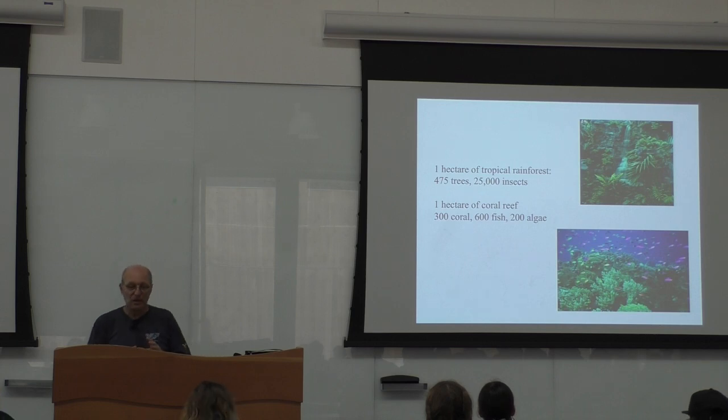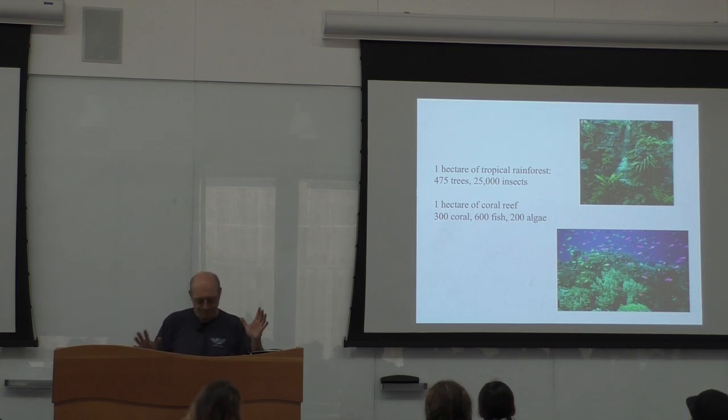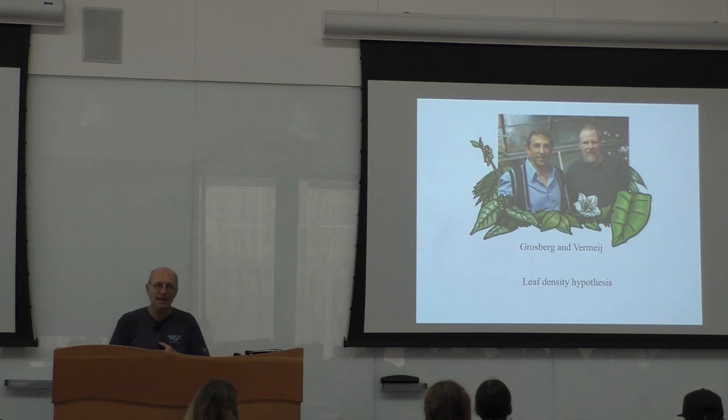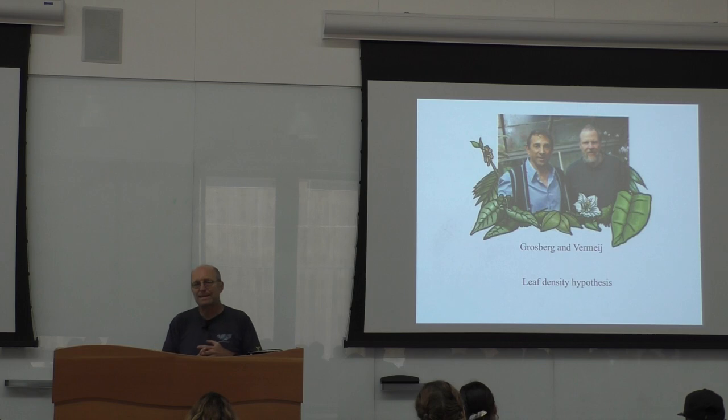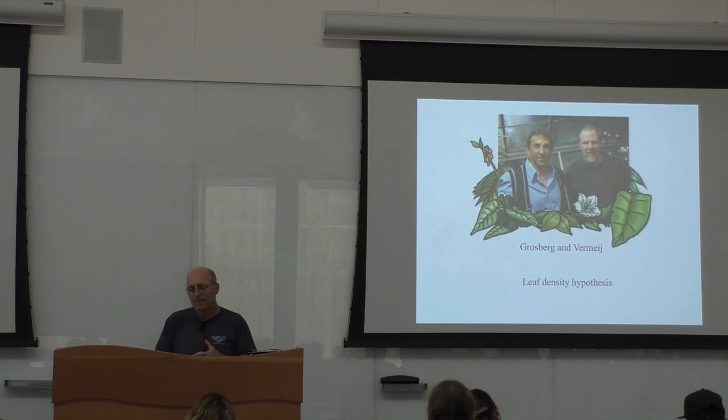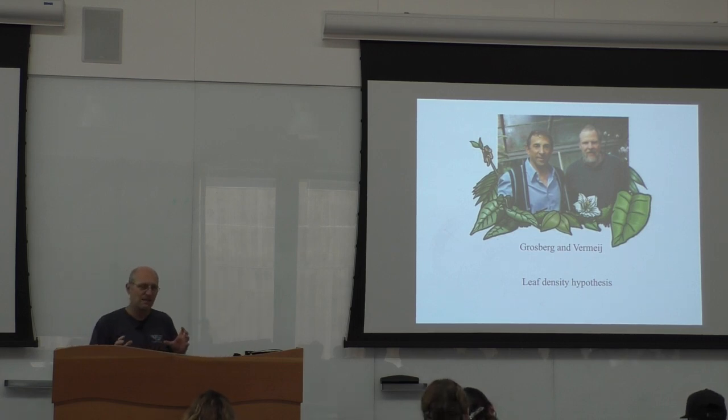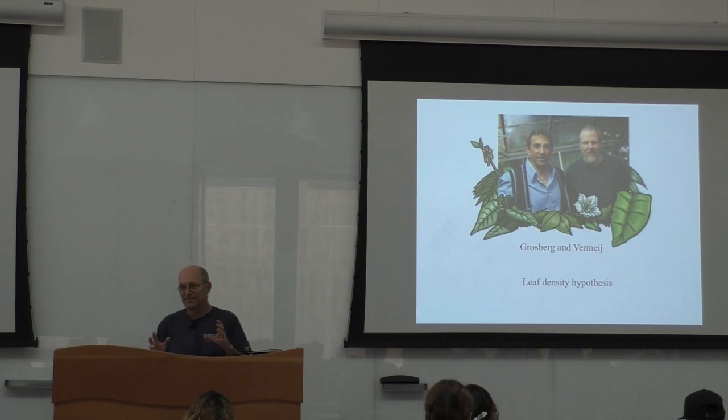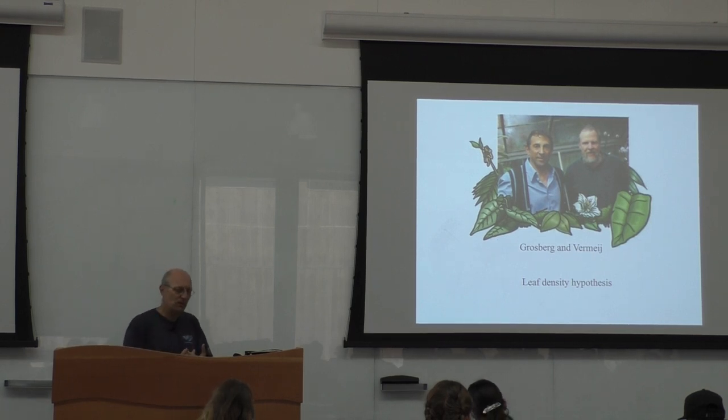In the big picture, if you like to think in very, very large time scales, which some people are really good at. One of the things that is really interesting was proposed by two professors at UC Davis, Gary Vermeij and Rick Rosenberg. And they talk about the vein density hypothesis. This is a big idea. The idea is that in the old days, there were more species of organisms in the ocean than on land.